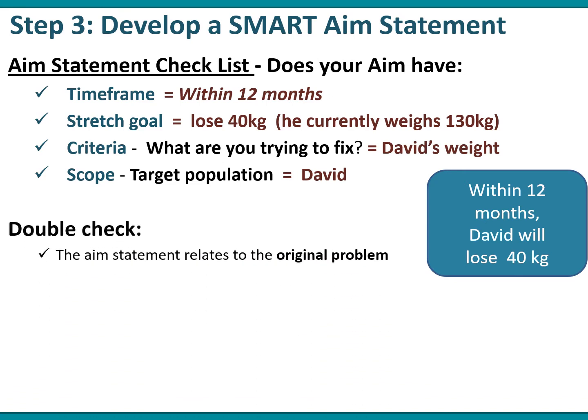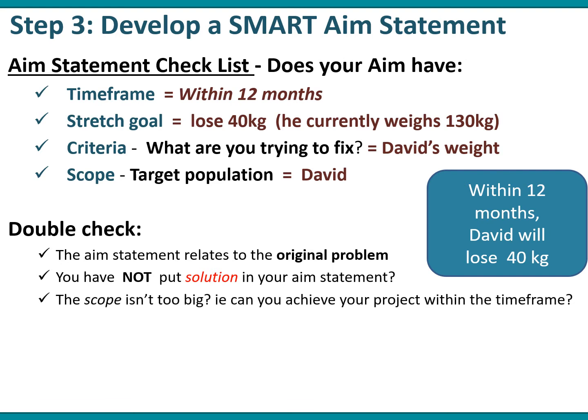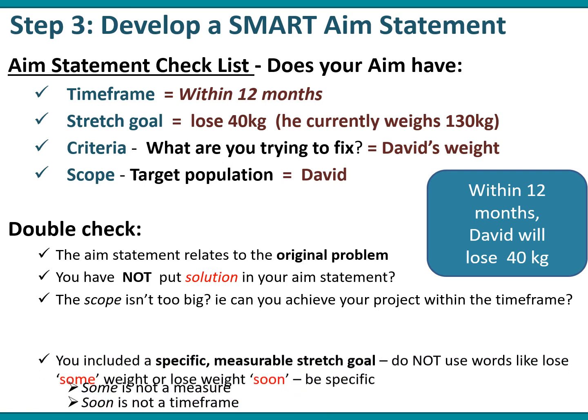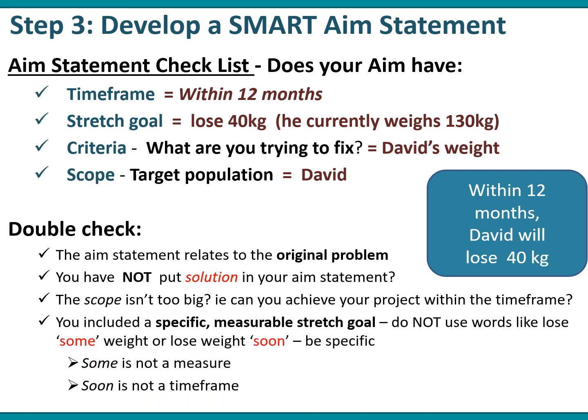A bit of a double check: make sure the aim statement relates to the original problem, so refer to the top left-hand corner of your driver diagram to confirm there is a relationship. Make sure you haven't put a solution in your aim statement, and that the scope isn't too brief — in other words, can you achieve the project within the timeframe you've set? Make sure you've got a specific measurable stretch goal. Don't use vague words. As Don Berwick says: some is not a measure, soon is not a timeframe, and hope is not a plan.